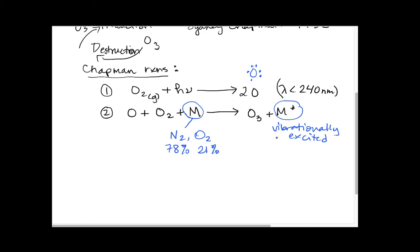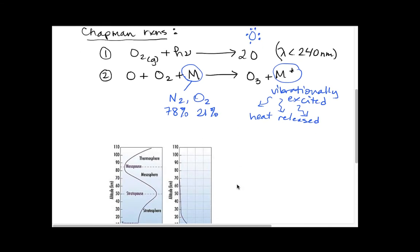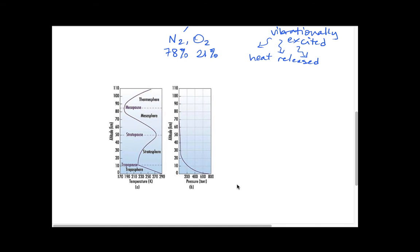This vibrationally excited molecule will slowly give off the energy as heat. We can see the temperatures in the stratosphere and troposphere in this figure. At ground level, we have comfortable temperatures, approximately room temperature. As we go toward the top of the troposphere, temperature decreases significantly, but then it starts to increase again in the stratosphere.